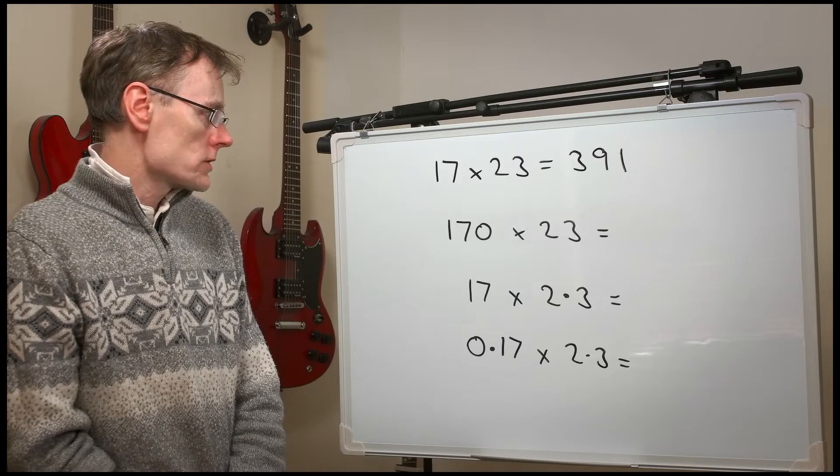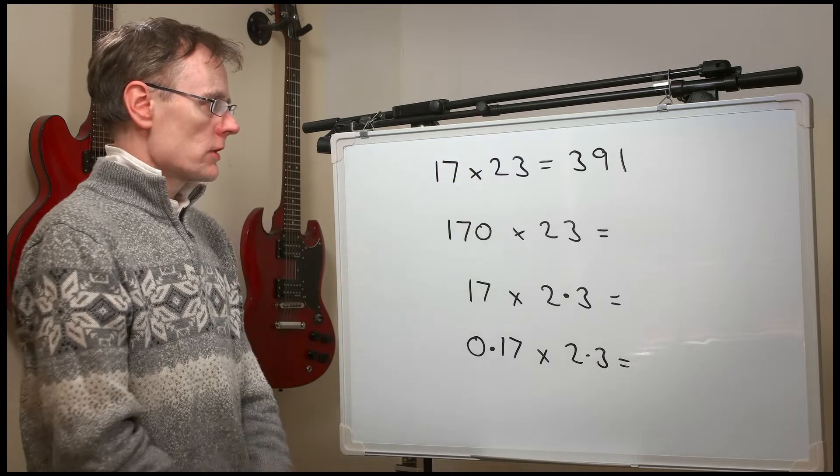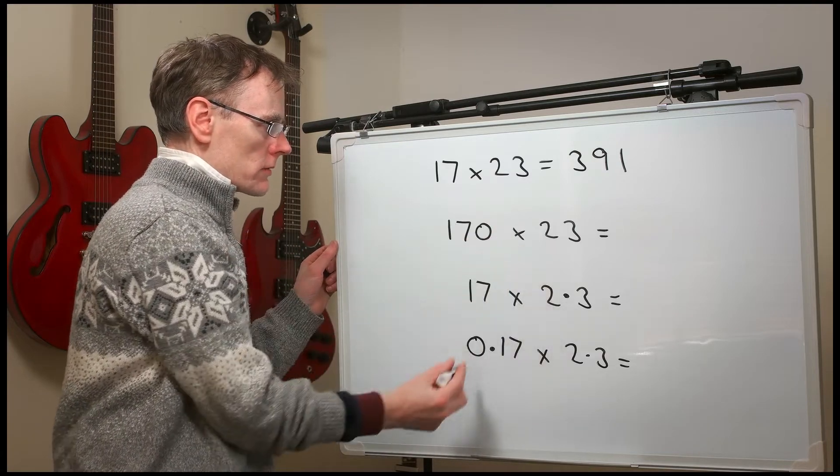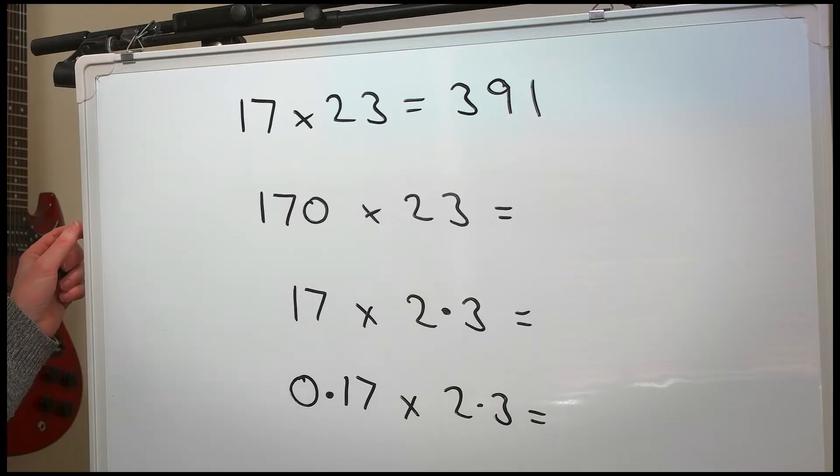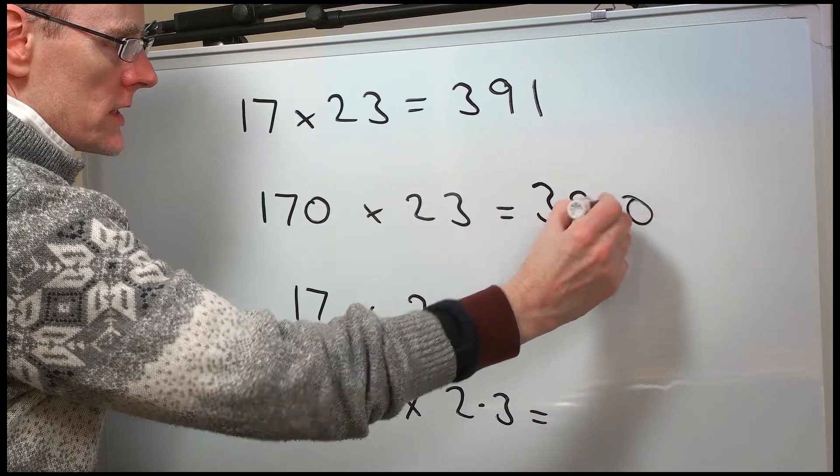Now, let's try these three questions. Again, we know 17 times 23 is 391. So 170 times 23, well, that's 10 times bigger. The answer is going to be 3,910.